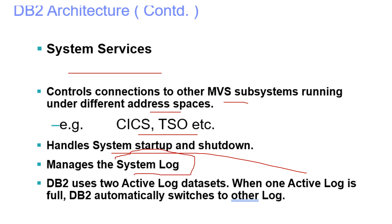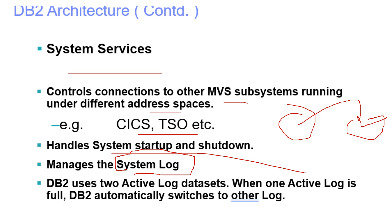The system log is an important concept in mainframe. DB2 uses two active log datasets, and when one active log dataset is full, it automatically switches to the other — called the secondary log dataset. There is also a backup called the archive log, which is usually cataloged in mainframe. DB2 maintains two copies of both the active log dataset and the archive log dataset.